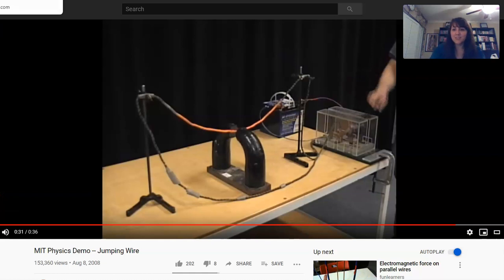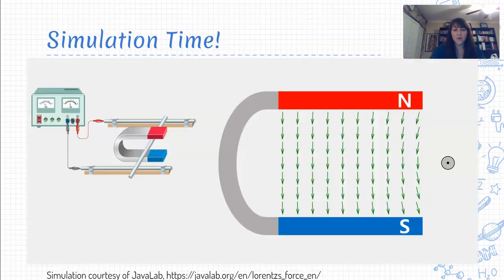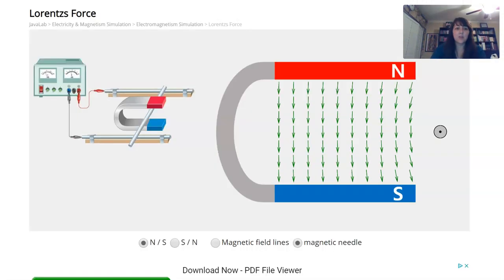That was kind of cute. We saw this interesting thing where the wire has a very strong response to that magnetic field when we have a current running through it. In order to better unpack what exactly is going on there, we're going to jump over to a little simulation. This is linked from the slides if you want to go in and play with it yourself. The simulation setup is really similar to what we saw in the demo, just rotated 90 degrees.